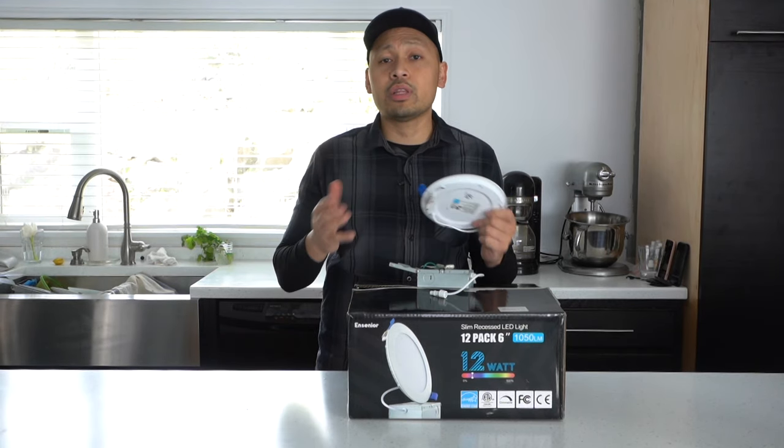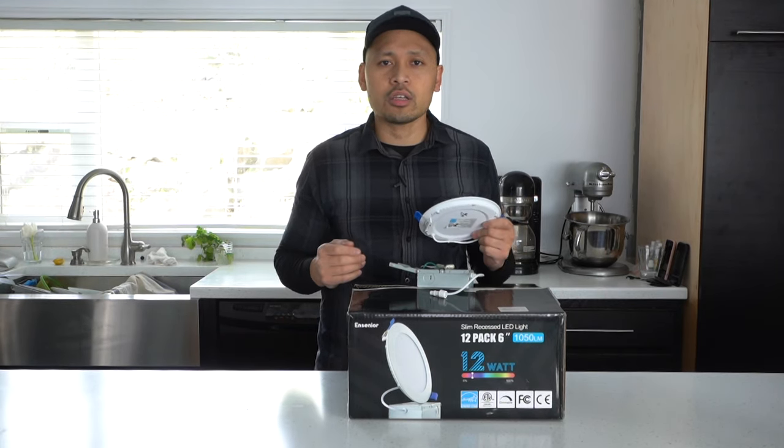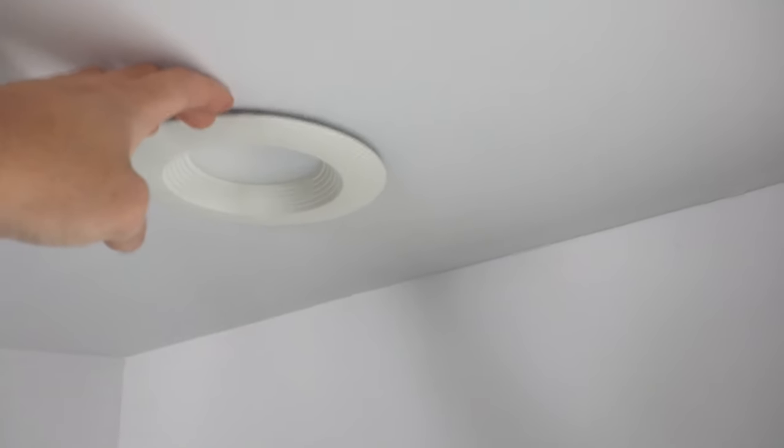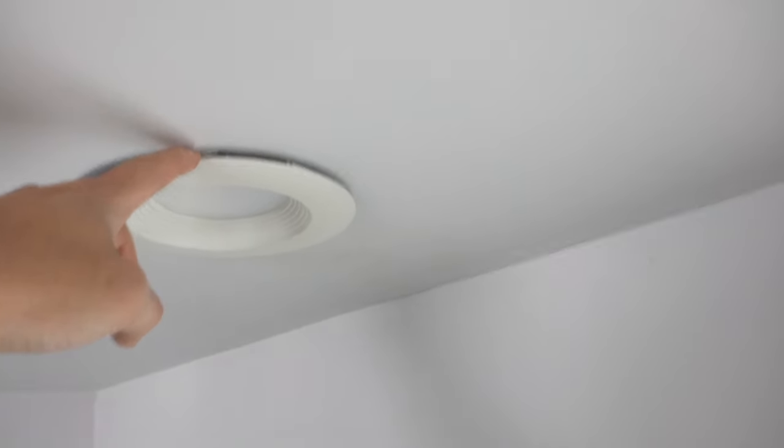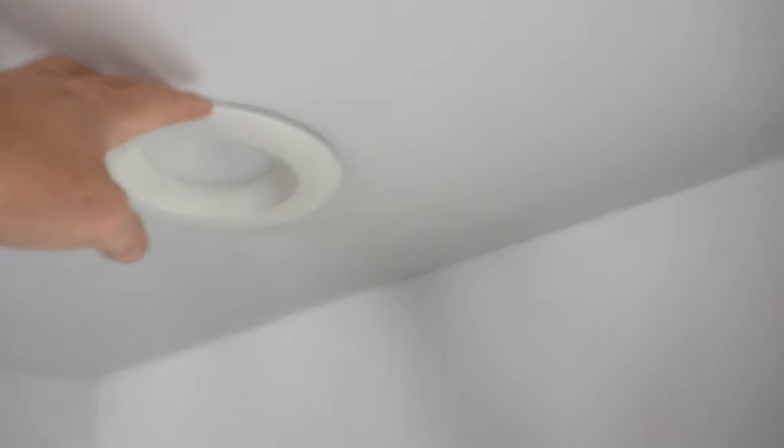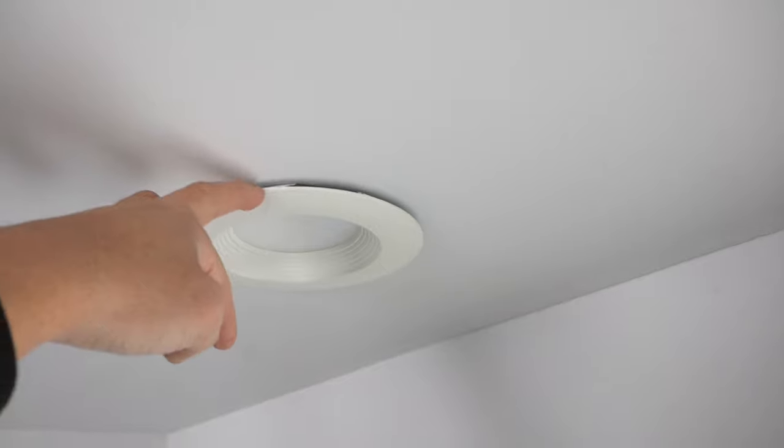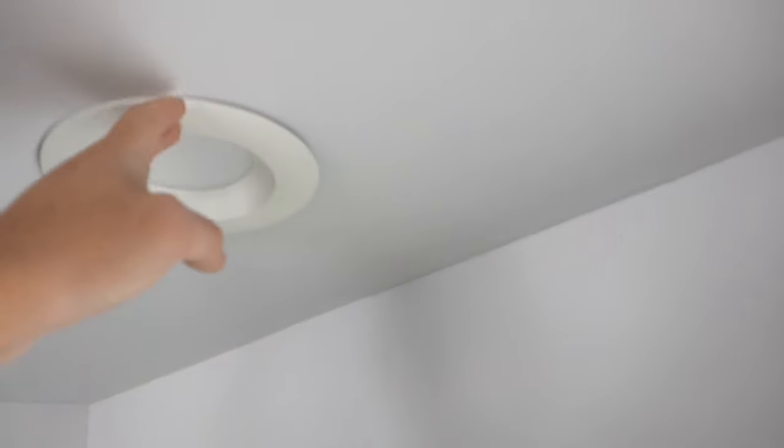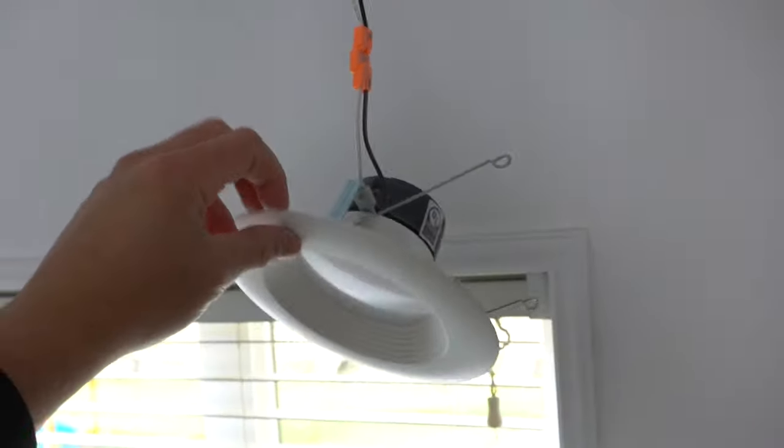Okay friends, so if you have any questions just leave it in the description down below. With that being said, let's get installing. Here's a good example of how one of the can lightings that I have on my kitchen sits. As you can tell, it is drooping down because these have very weak clips on them. That's why over time it sags like this.